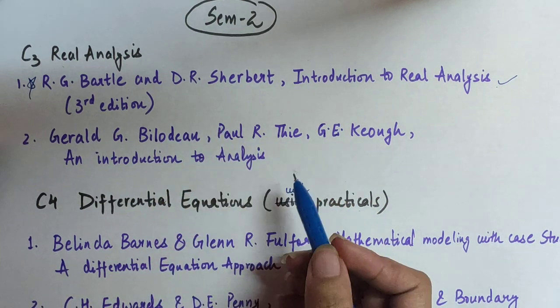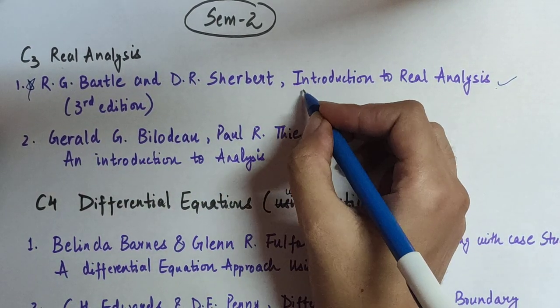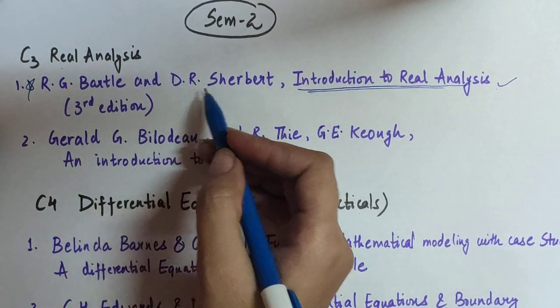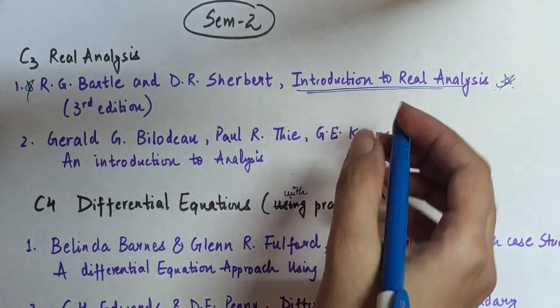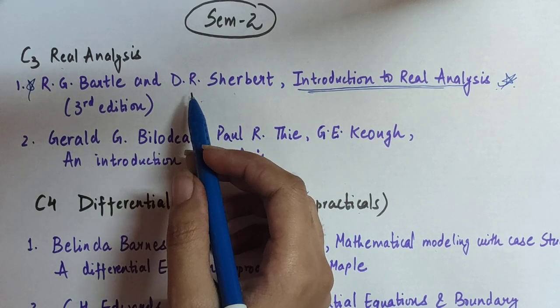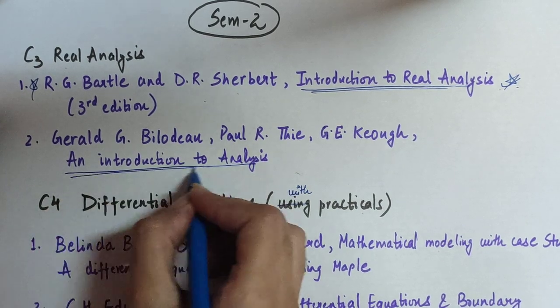So now let's discuss the books for Real Analysis. We have two books. First is Introduction to Real Analysis by R.G. Bartle and D.R. Sherbert. Now this is a very famous book and a very important book as well. You must have this book if you want to pursue a career in mathematics. Second book is An Introduction to Analysis by these particular authors.